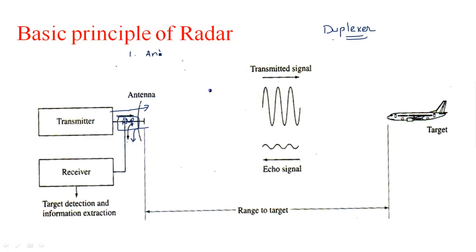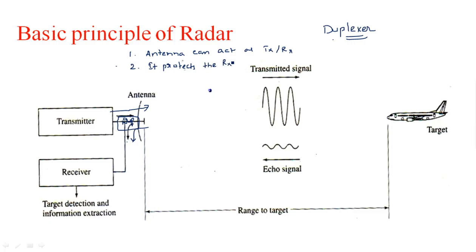The duplexer enables the antenna to act as both transmitting and receiving antenna, and it also protects the receiver from damage. These are the two main purposes of a duplexer.